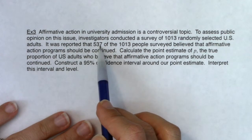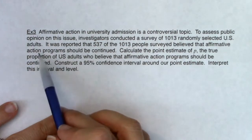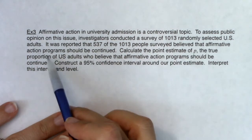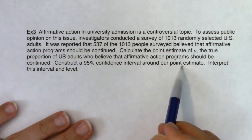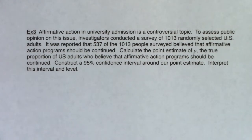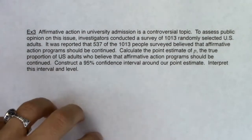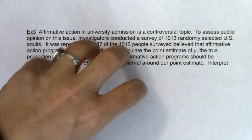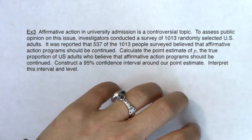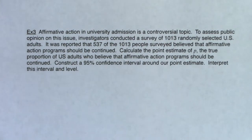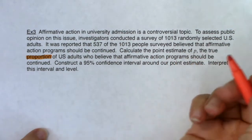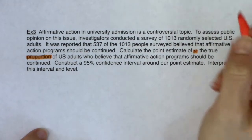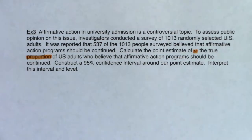Affirmative action in university admissions is a controversial topic. Investigators surveyed 1,013 randomly selected U.S. adults; 537 of them believe affirmative action programs should be continued. We need to: (1) calculate the point estimate of p — the true proportion of U.S. adults who believe programs should be continued; (2) construct a 95% confidence interval; and (3) interpret the interval and level.